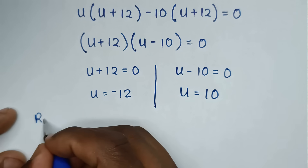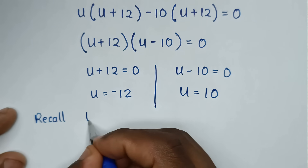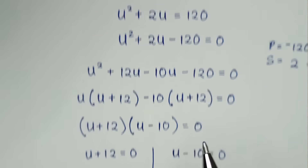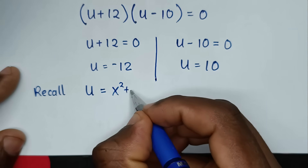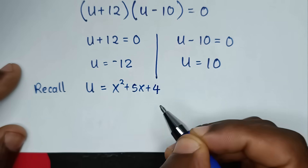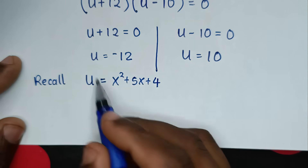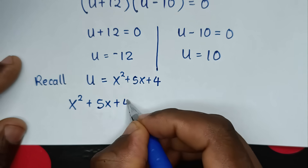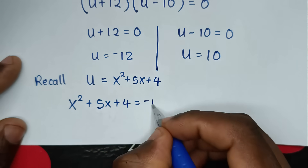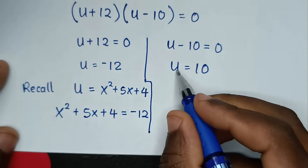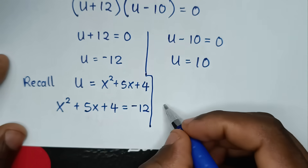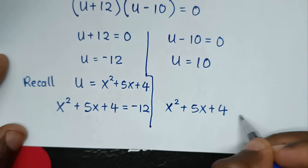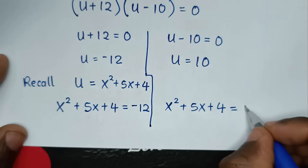Recalling that we let u = x² + 5x + 4, we back-substitute. For u = -12: x² + 5x + 4 = -12. For u = 10: x² + 5x + 4 = 10.